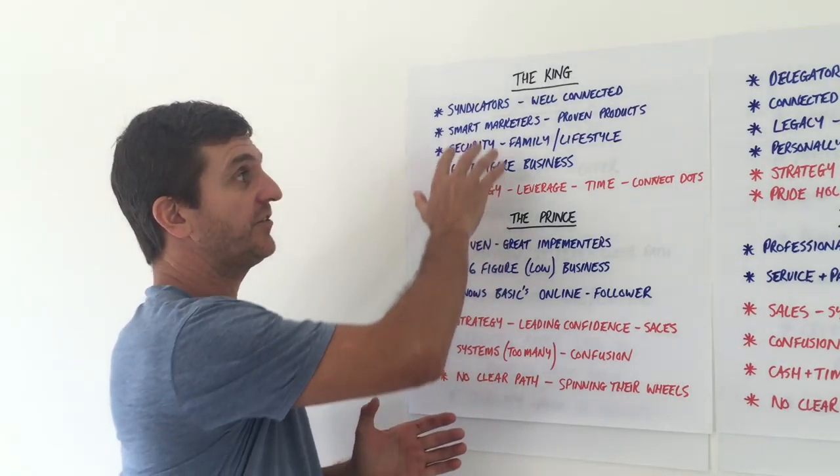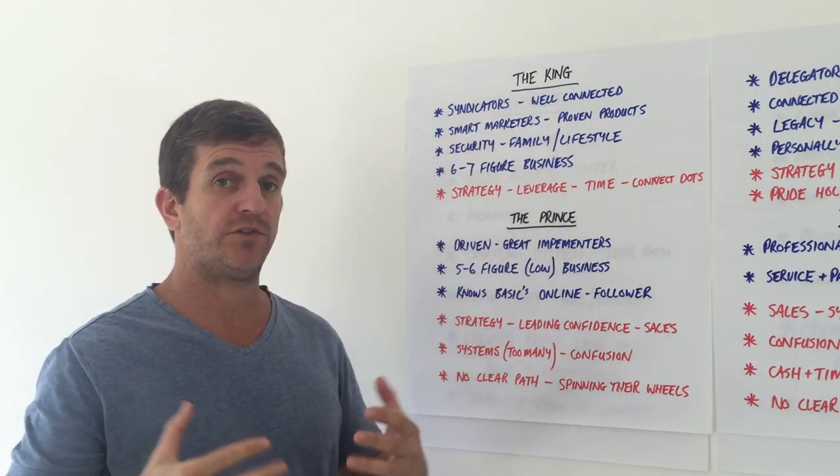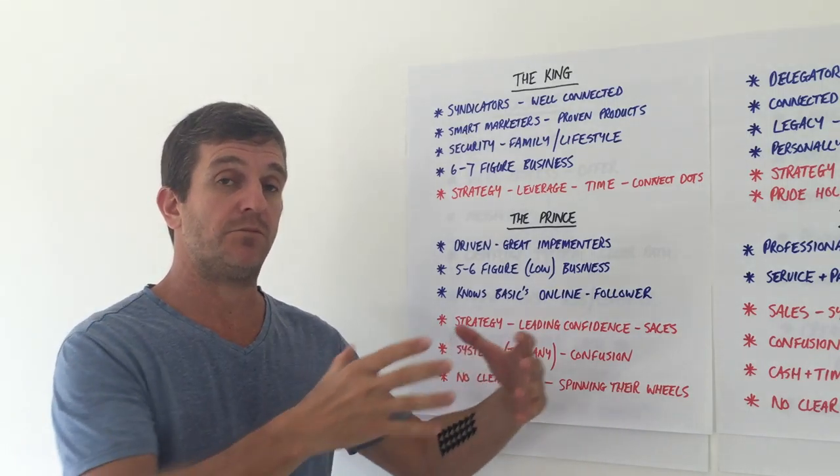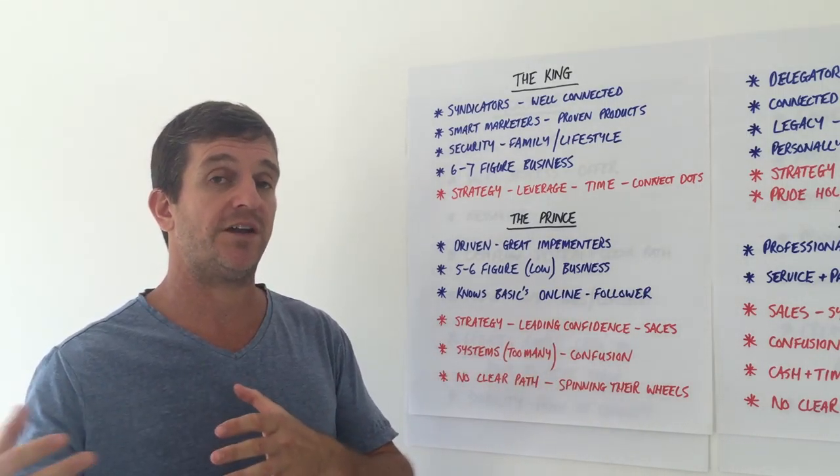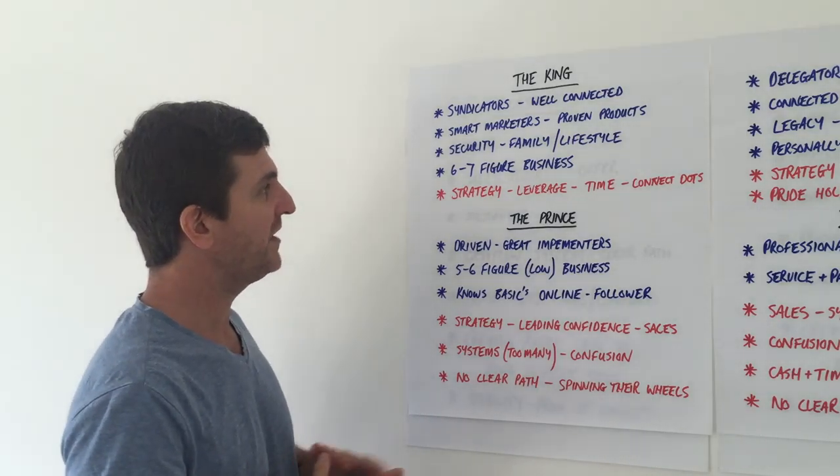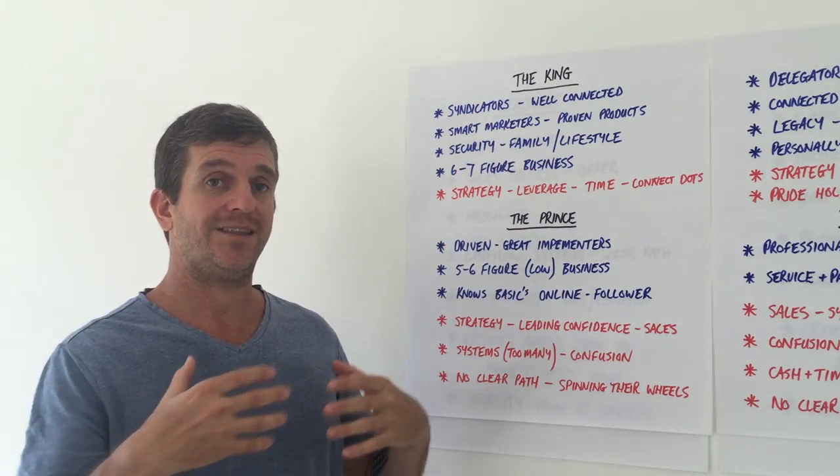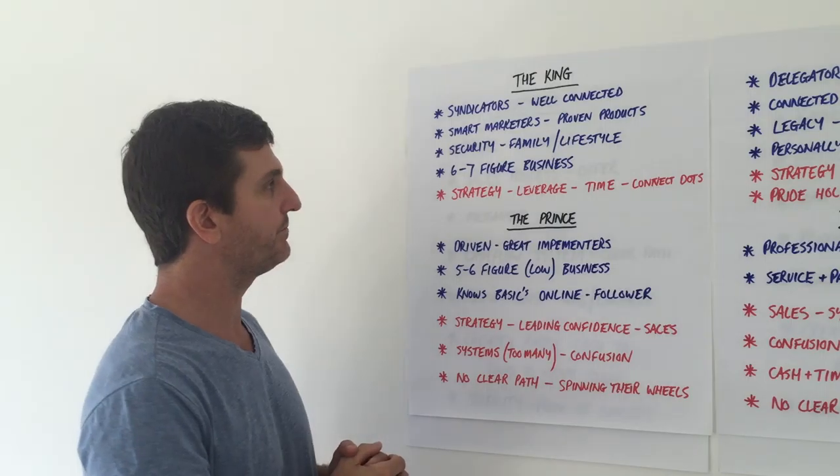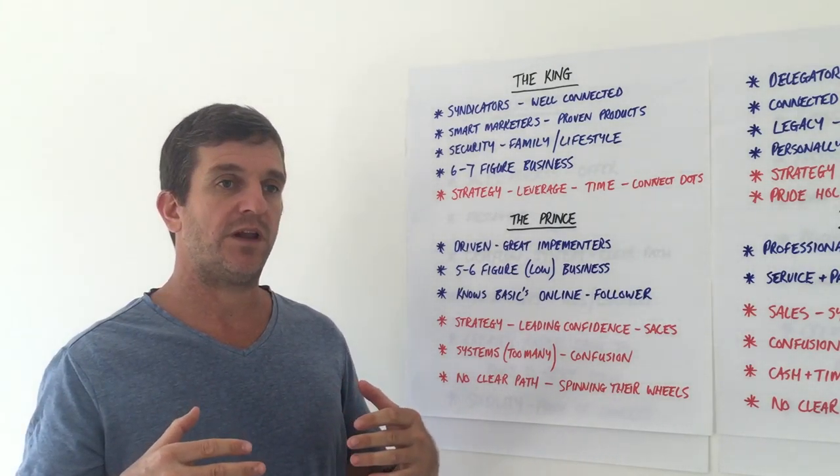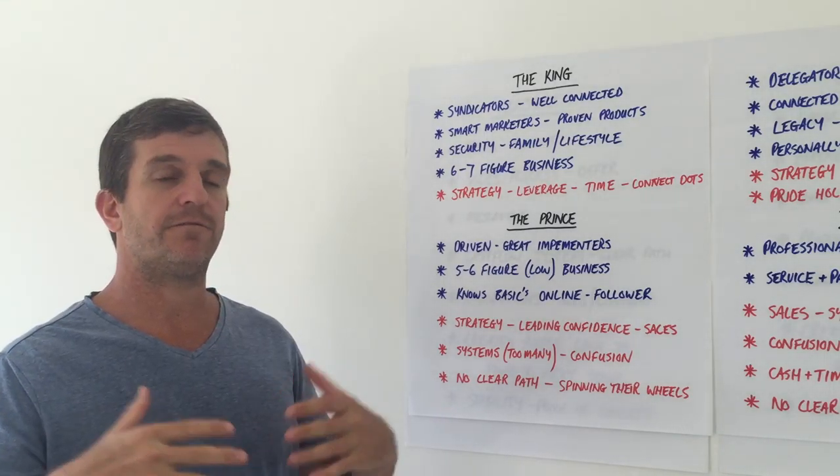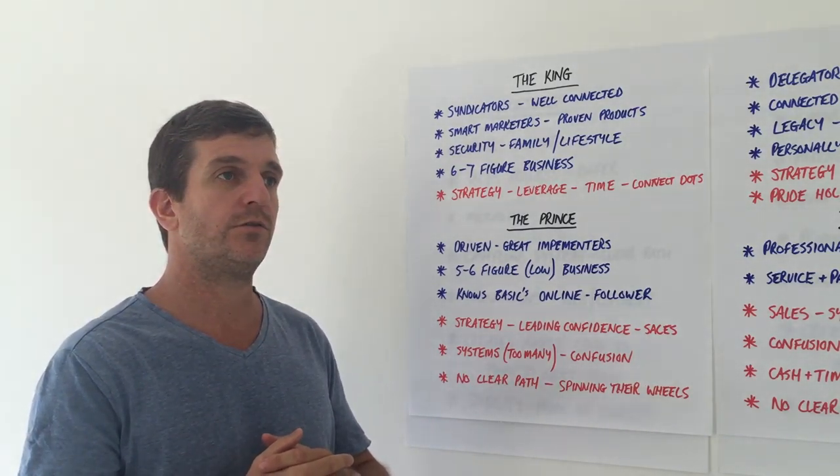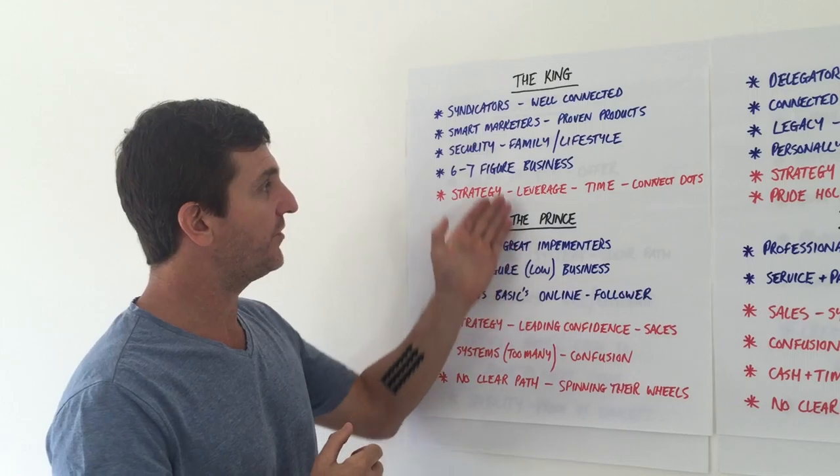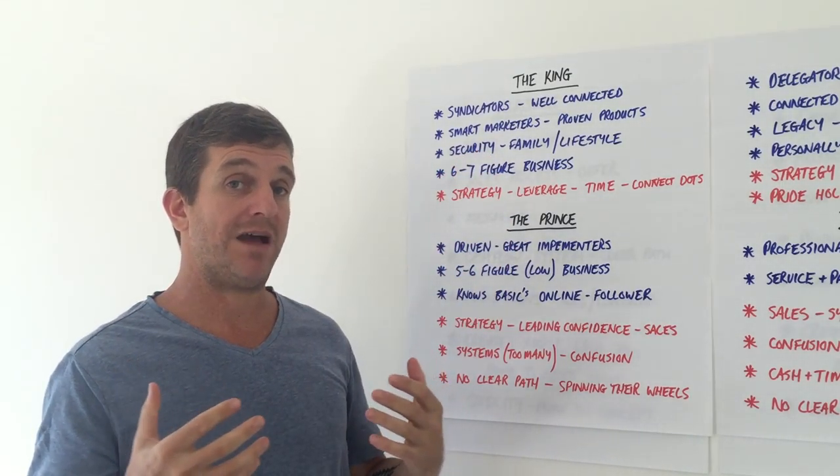When kings come to me, they already have a really healthy six or seven figure business. They're super well connected - they're syndicators, they're able to grow networks and partnerships really well. They normally have a really good network of affiliates, JV partners, or simply partnerships already established. They're also really smart marketers in their own right with proven results on the board.